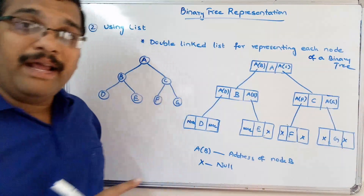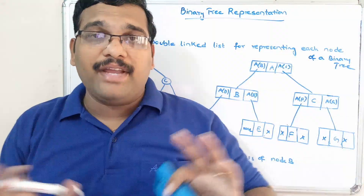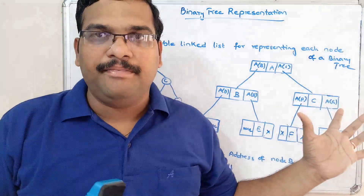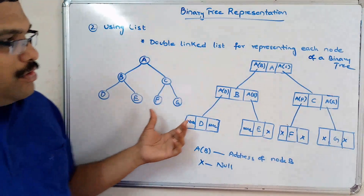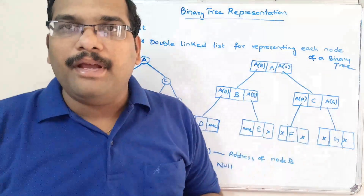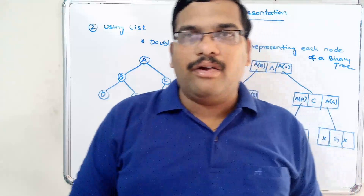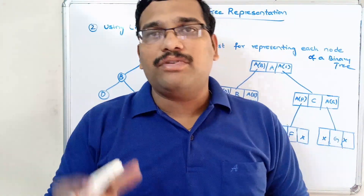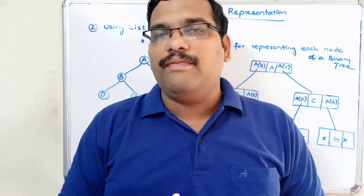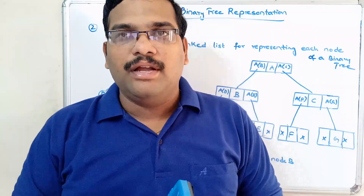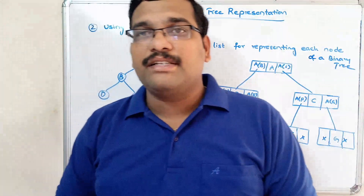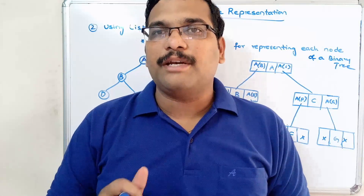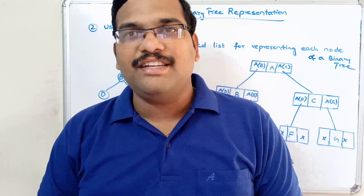So hope you understood both representations. For array representation we use the formulas 2i+1 and 2i+2, and for list representation we use a doubly linked list for each node. If you have any doubts regarding this representation concept, feel free to post in the comment section. If you understood my sessions, please like, share, and subscribe to our channel. Thanks for watching!